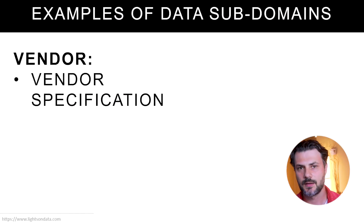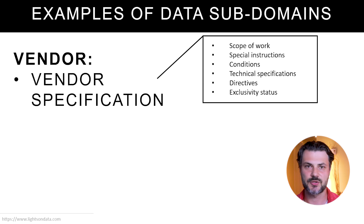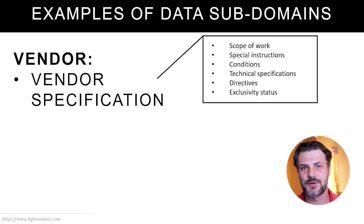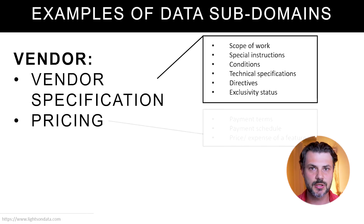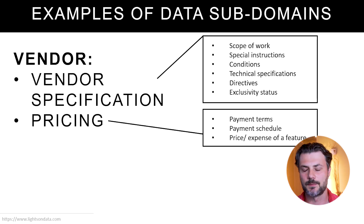Vendor. The first data subdomain is vendor specification, which could include data related to scope of work, special instructions, conditions, technical specifications, directives, exclusivity status, and so on. Pricing could be another subdomain, covering payment terms, payment schedule, the price or expense of a feature, and so on.